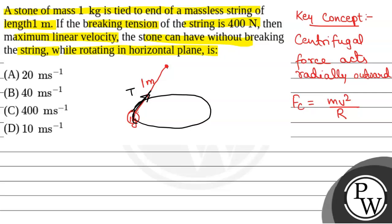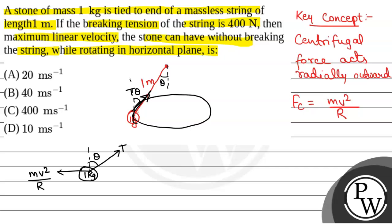We have to find the maximum linear velocity that the stone can have without breaking the string. Looking at the free body diagram of the stone: this is the 1 kg stone and here tension will act. Suppose this angle is theta — the angle the string makes with the vertical is theta. This angle will also be theta, and radially outward centrifugal force Mv²/R will act. We also have the weight of the stone, and we take components of tension: T cosθ in the vertical direction and T sinθ in the horizontal direction.